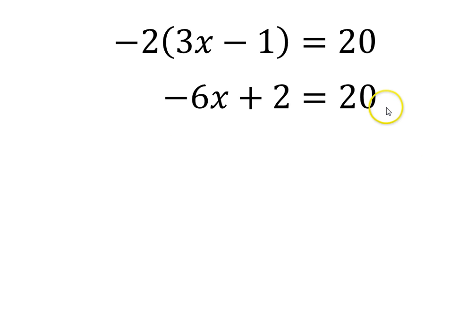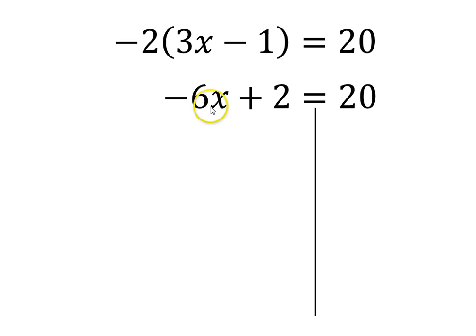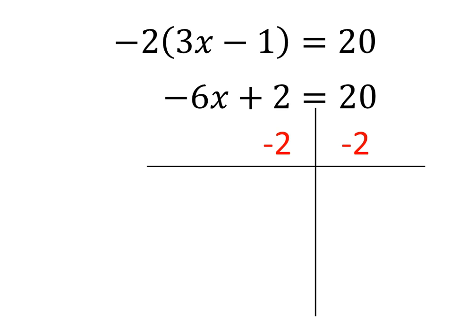Now we're down to a basic two-step equation. I'm going to separate the left side from the right side again. I want to get rid of the plus 2 to isolate x, doing order of operations backwards. The opposite of plus 2 is minus 2, so I subtract 2 from the left-hand side, and what you do to the left side you must do to the right side, so minus 2 there as well. When we combine terms, we get negative 6x on the left — the 2s cancel — and 20 minus 2 is 18 on the right. So now we have negative 6x equals 18.